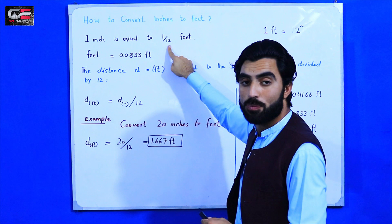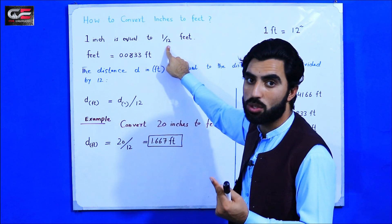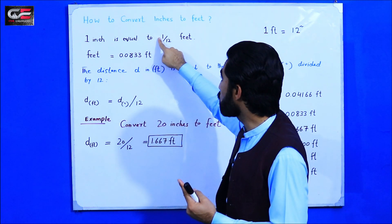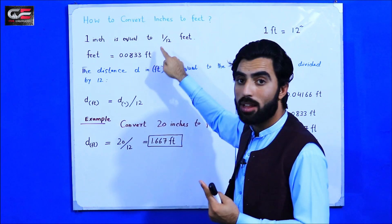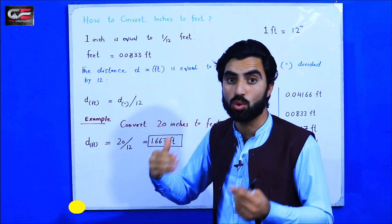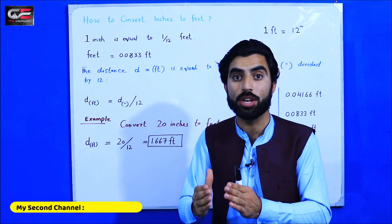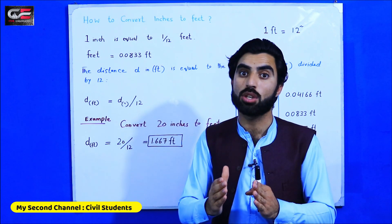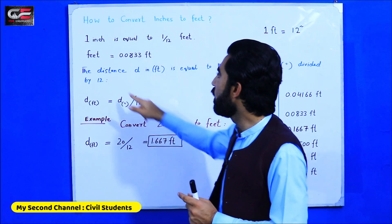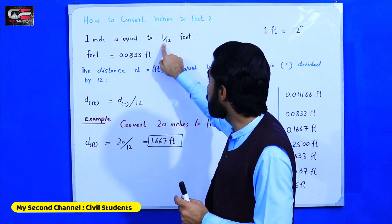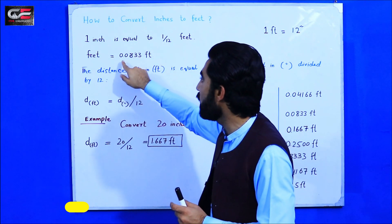One inch is equal to 1/12 feet because in one foot we have 12 inches. When you want to convert one inch or two inches to feet, it should be divided by 12. When you divide one inch by 12, it will give you the value 0.0833 feet. So one inch is equal to 0.0833 feet.